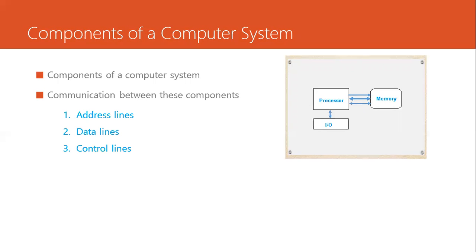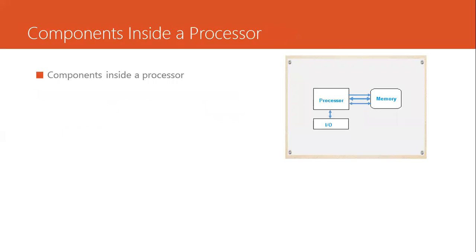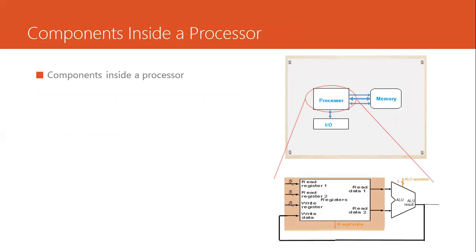These buses are used by the processor to perform meaningful work, and control signals are used for synchronization. Let's now look inside the processor to discuss some of its most important components. We have the register file — a small but very fast memory that lies inside the processor, operating almost at the speed of the processor itself.